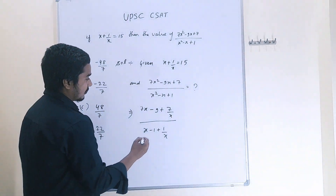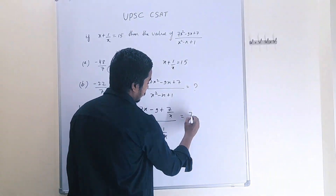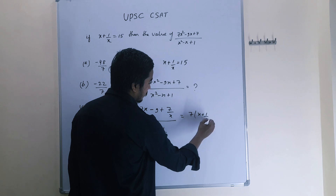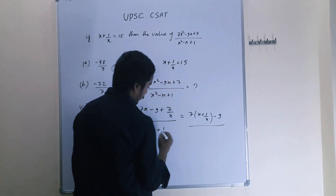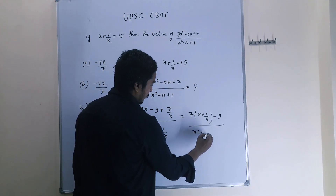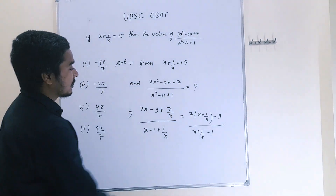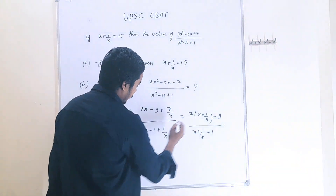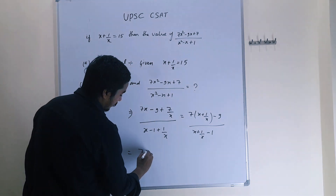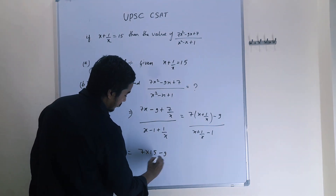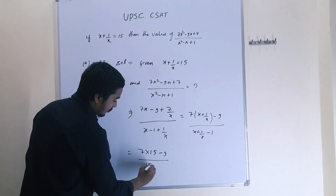From here, 7 is common in the numerator, giving us 7(x + 1/x) - 9 upon (x + 1/x) - 1. Since x + 1/x = 15, putting that value in: 7 × 15 - 9 upon 15 - 1.